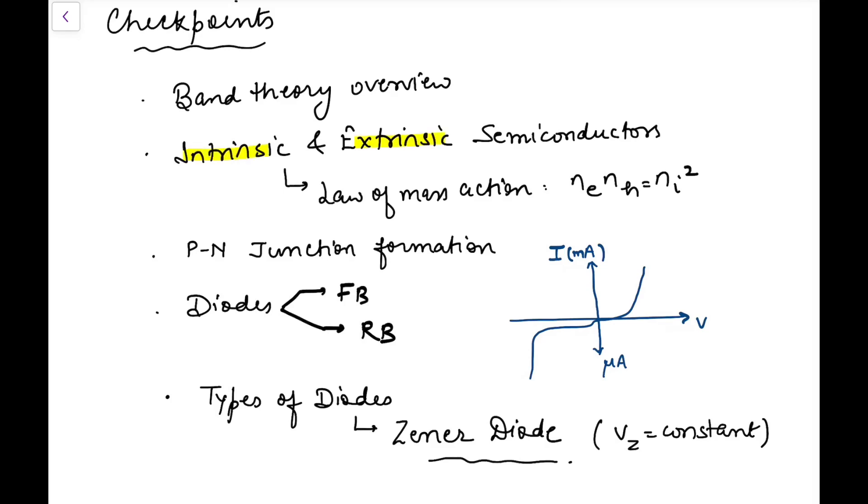Then what is intrinsic, what is extrinsic semiconductors, basic differences, and the numerical formula that you will require is law of mass action, which for any type of semiconductor is valid: n_e into n_h should be equal to n_i squared. And you can say that the conductivity is due to electrons plus conductivity due to holes, current is current due to electrons plus current due to holes.